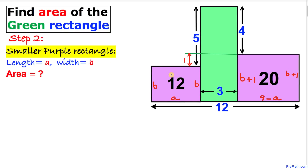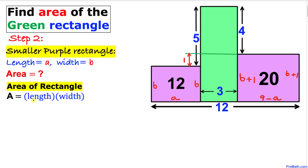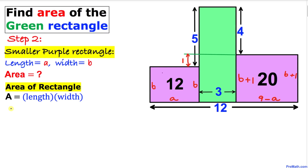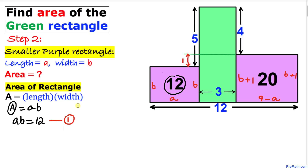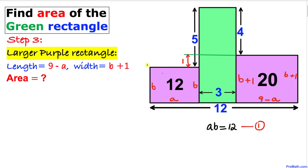Next, let's focus on the smaller purple rectangle and find its area in terms of length a and width b. Using the formula: area equals length times width, we get a times b. Since we know the area is 12, we can write a × b = 12. I'll call this Equation 1.